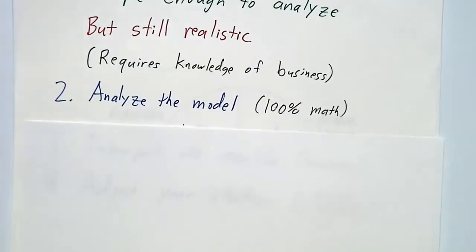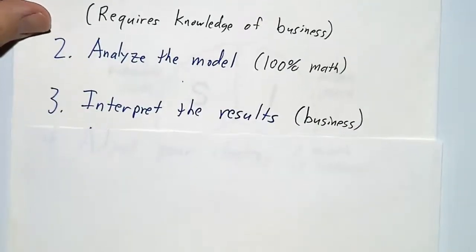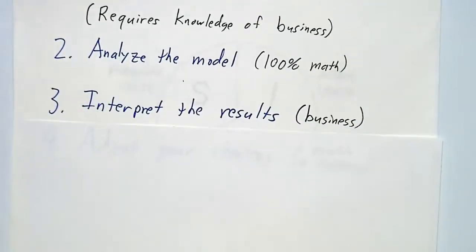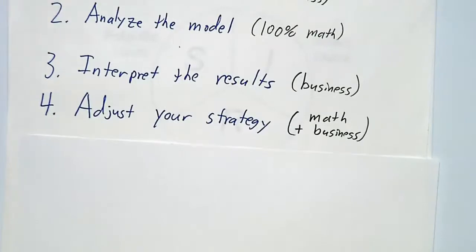The second stage, we're going to analyze the model. Given our parameters and our initial conditions, we're going to run things and see what happens. Then we're going to interpret the results — if such and such function has such and such value at such and such time, what does that mean for your business? And finally, we're going to adjust our strategy using both math and business sense in order to achieve the best possible result.